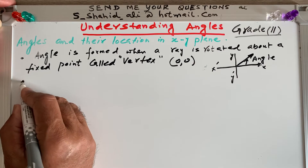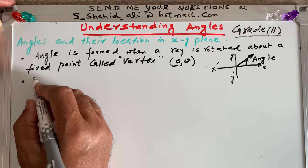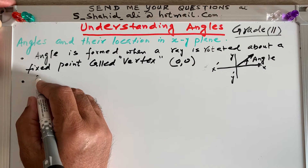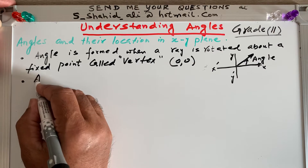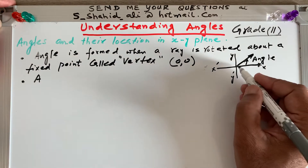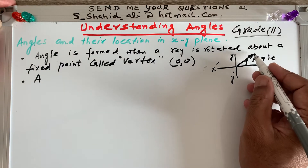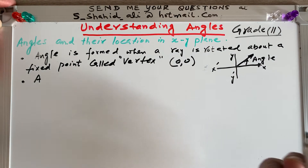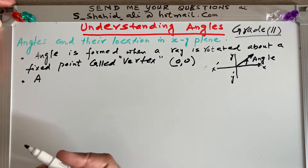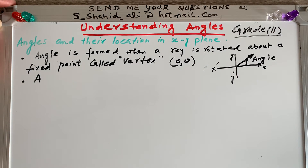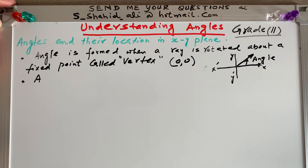If you remember from the last grade, a ray has one fixed point and the other end is unlimited. We put an arrowhead on the end to indicate that it is moving in one direction.